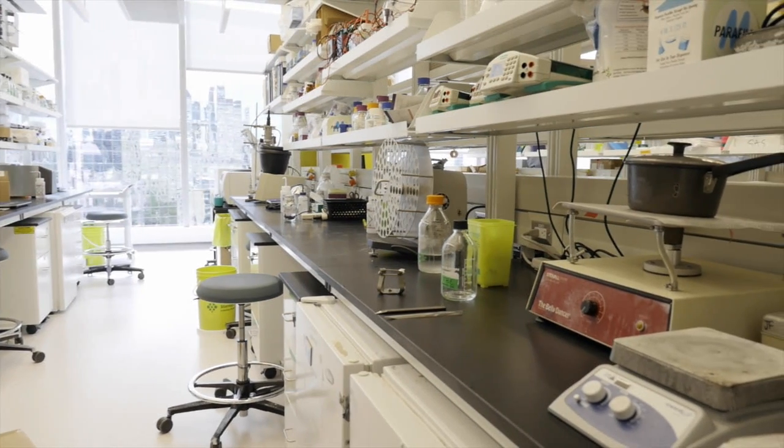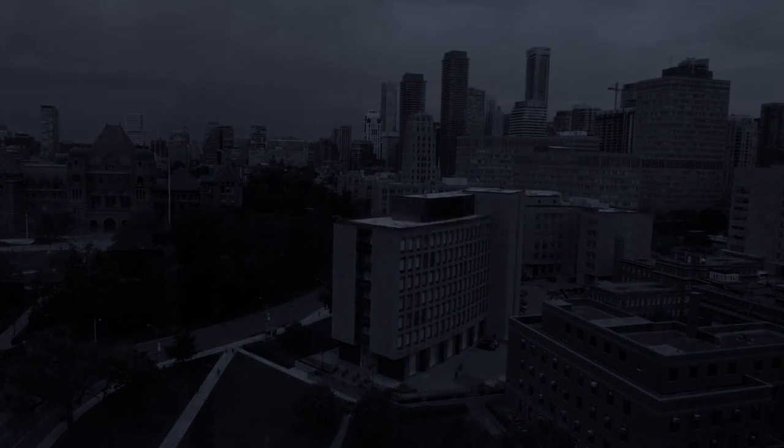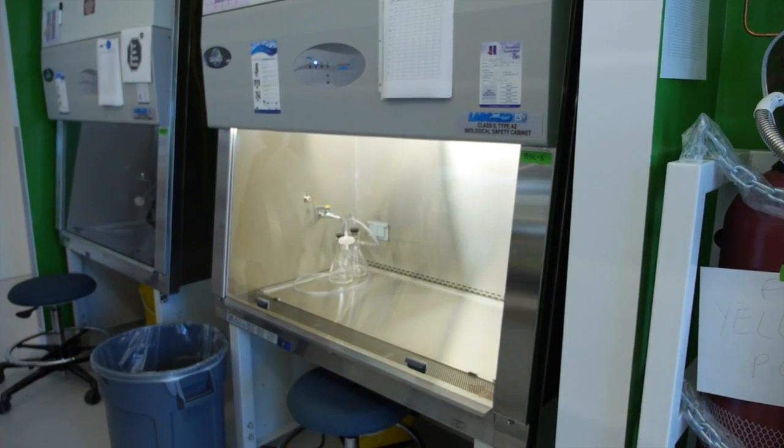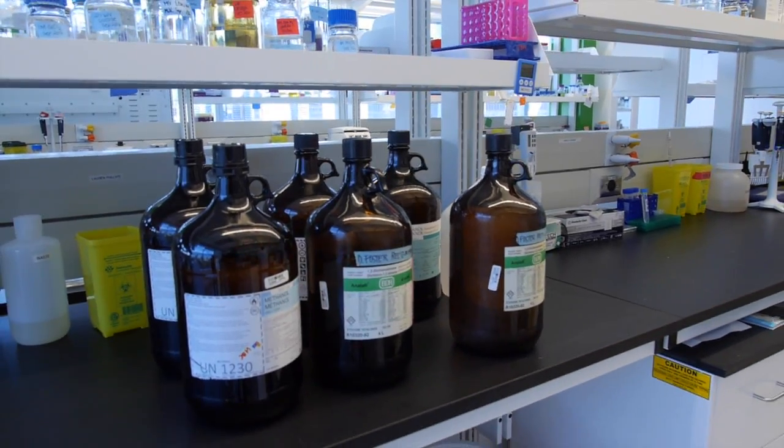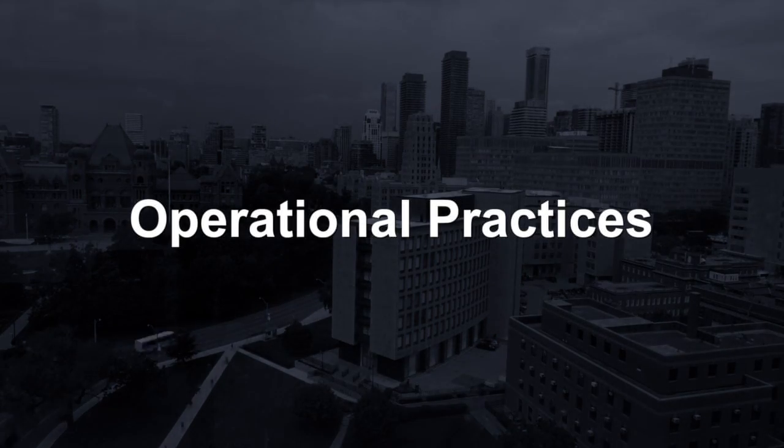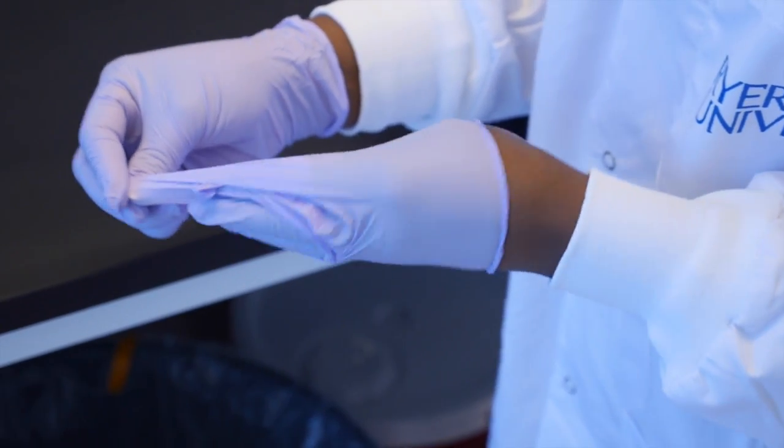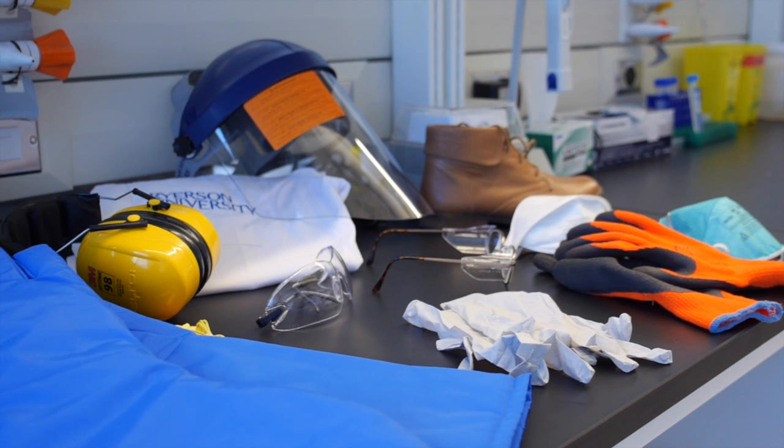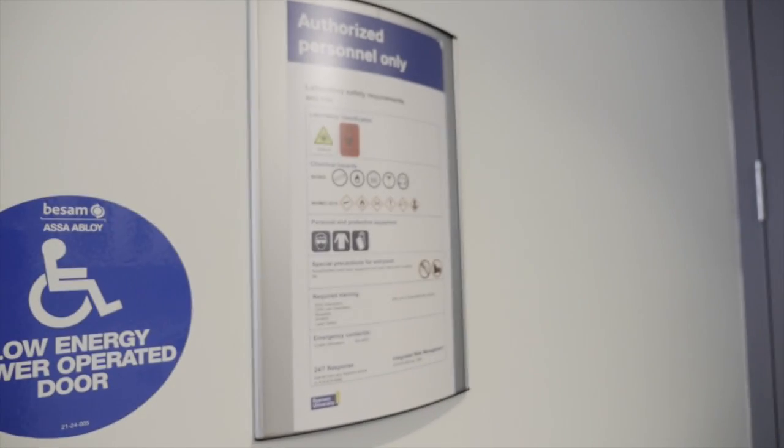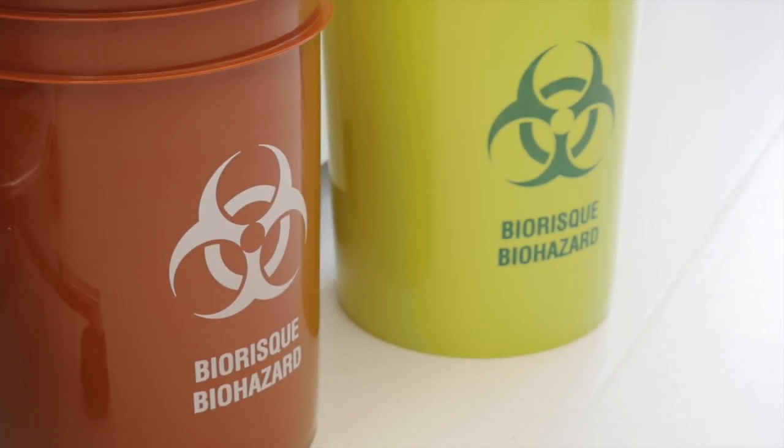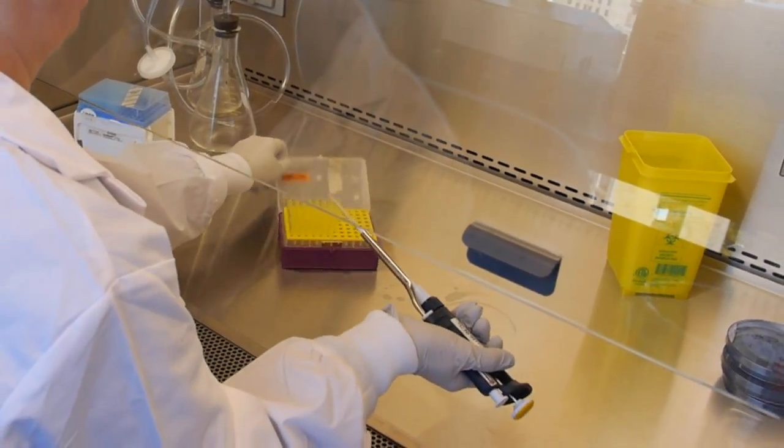This includes physical containment requirements such as structure, location, surface finishes and air handling, as well as operational practice requirements such as training, personal protective equipment use, and procedures for entry, exit, waste disposal, and safe handling of materials.